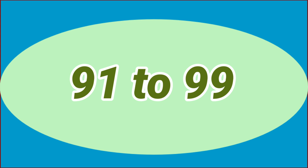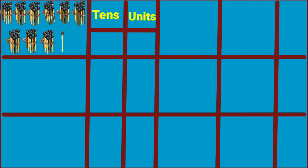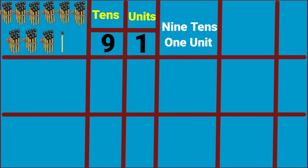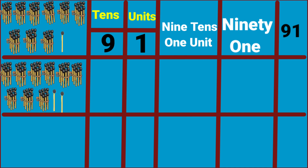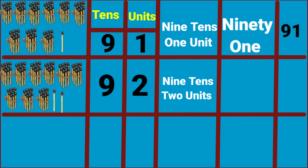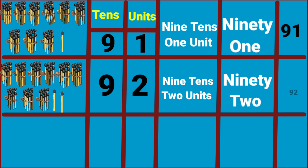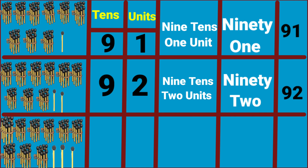Ninety-one to ninety-nine. Nine tens, one unit: ninety-one. Nine tens, two units: ninety-two.